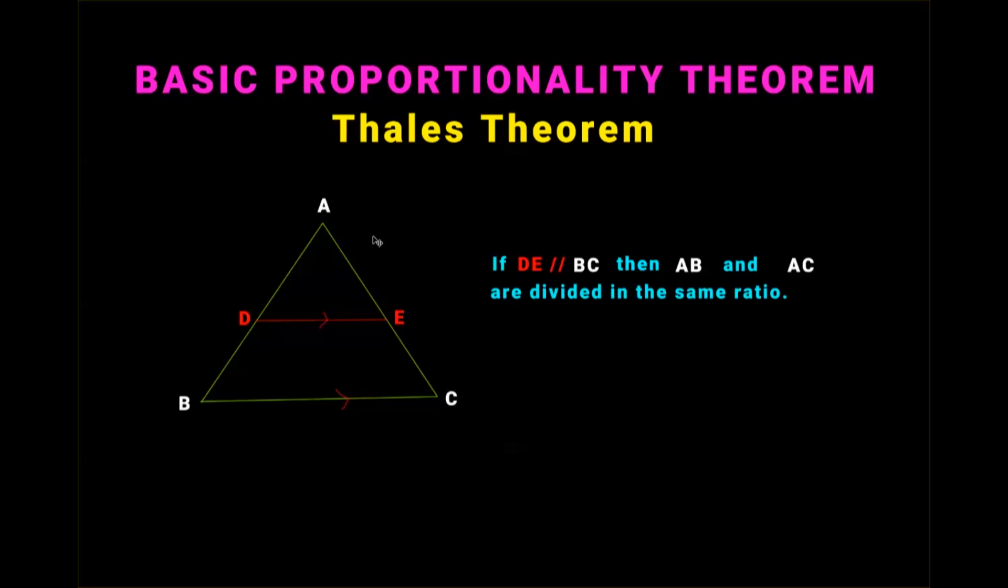Let us take a look at side AB. This point D here splits AB into two parts: AD and DB. The ratio of these two parts can be written as AD by DB, or we say the point D has divided AB into the ratio of AD to DB.